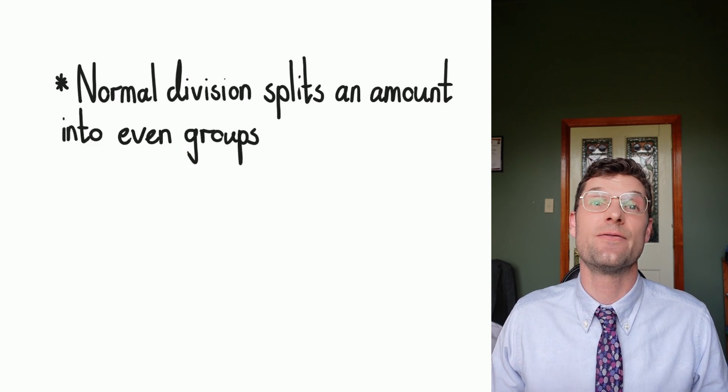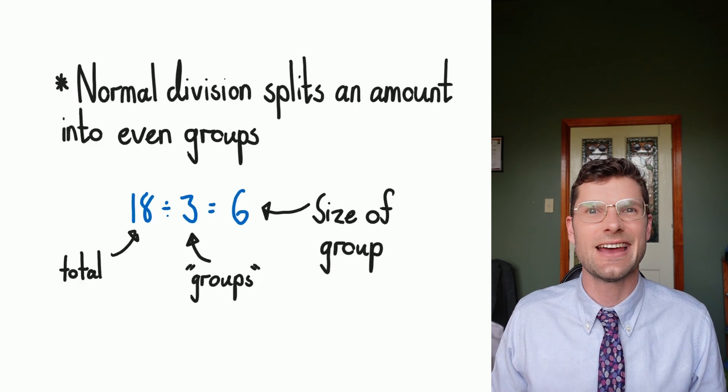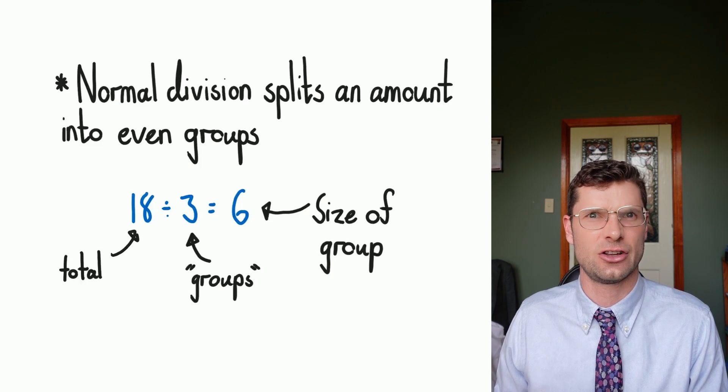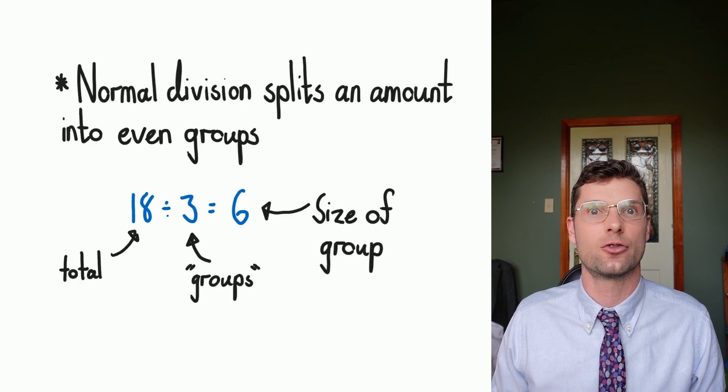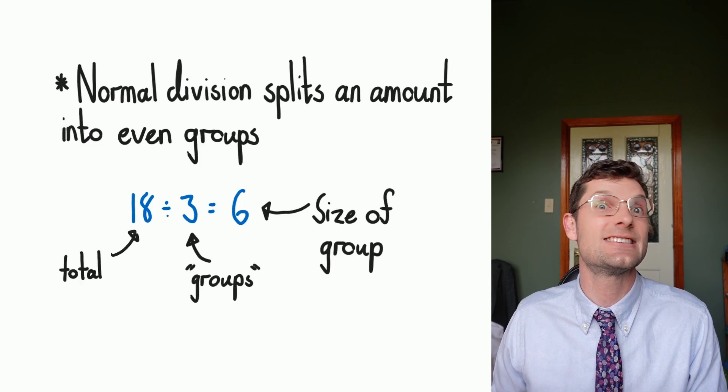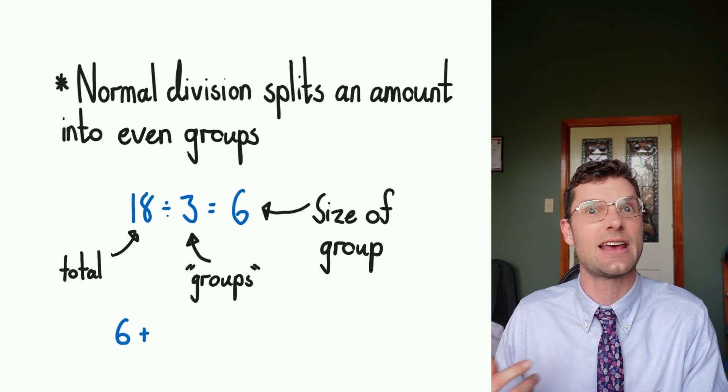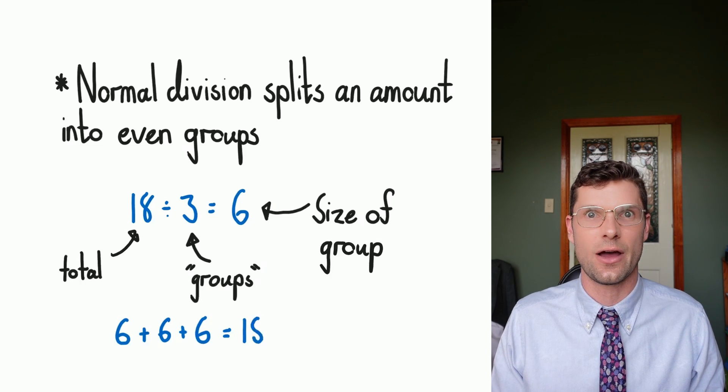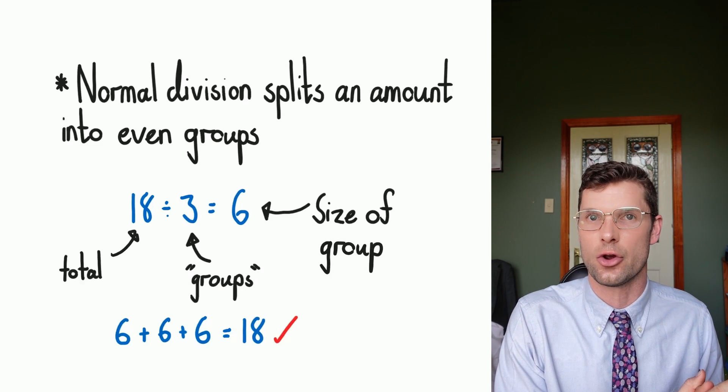So usually when we divide something, we're dividing something into even groups. An example of this would be 18 divided by 3 equals 6. If we look at what each part of that equation means, 18 is the total amount, 3 is the number of groups that I want, and 6 is gonna be how big those groups are. So 6 plus 6 plus 6 equals 18. 18 divided by 3 means I need three even groups that equal up to the total amount.